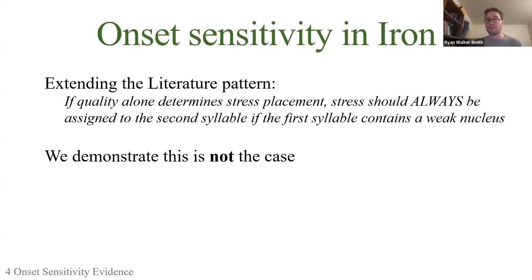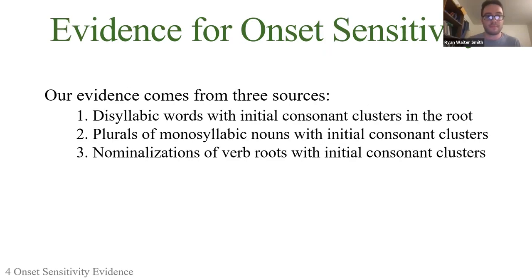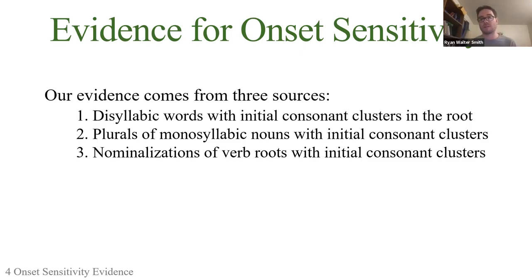However, this simple picture is not the case. The talk will show counterexamples from three sources: first, disyllabic words with initial consonant clusters in the root; second, productive morphology — specifically pluralizing monosyllabic nouns with initial consonant clusters; and third, applying productive morphology to verb roots to form agentive nominalizations from monosyllabic verb roots with initial consonant clusters.